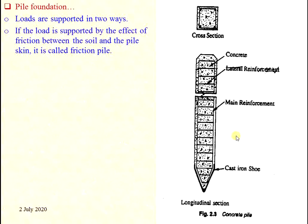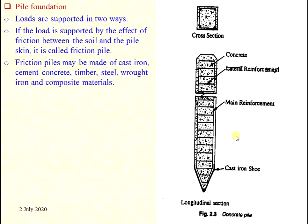Loads are supported in two ways. If the load is supported by the effect of friction between the pile skin and the soil, it is called a friction pile. The friction pile may be made of cast iron, cement concrete, timber, steel, wrought iron, or composite materials.